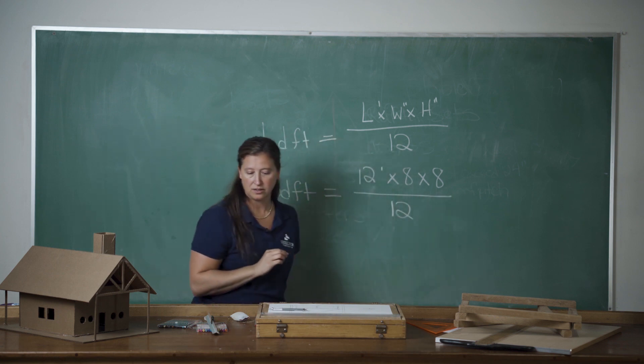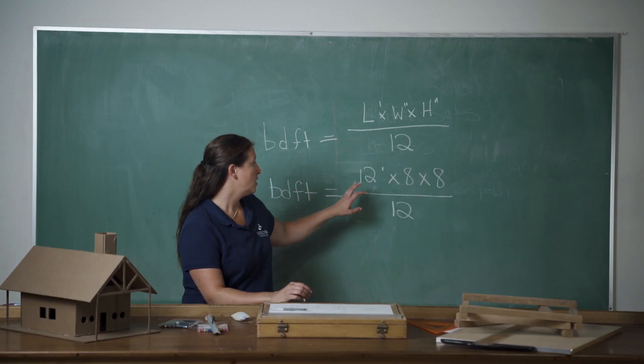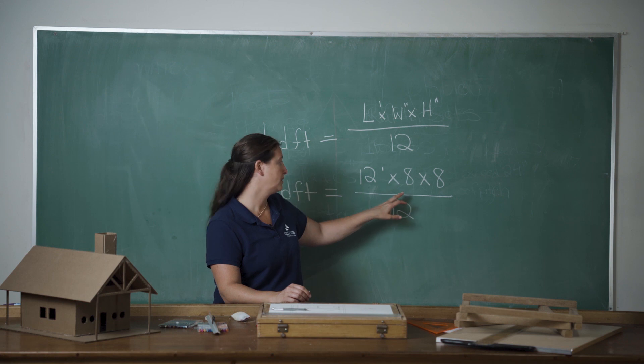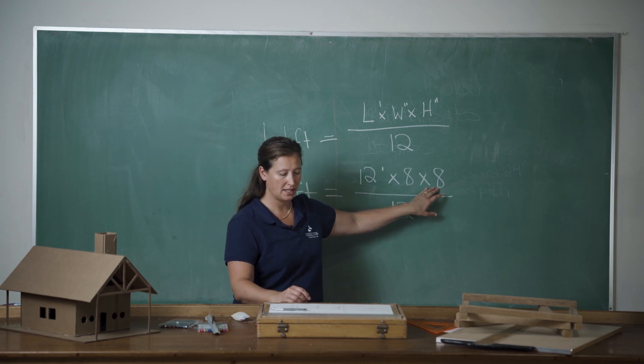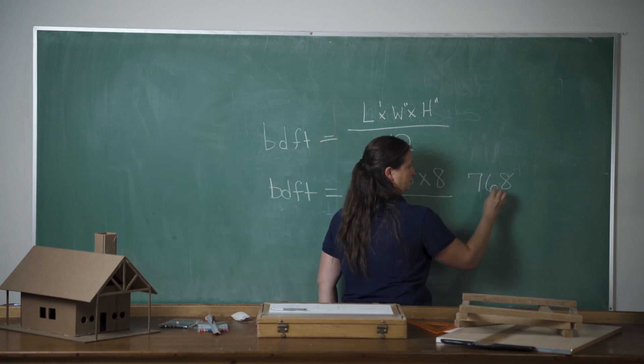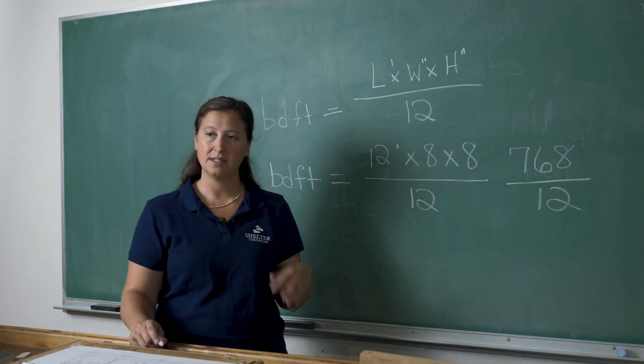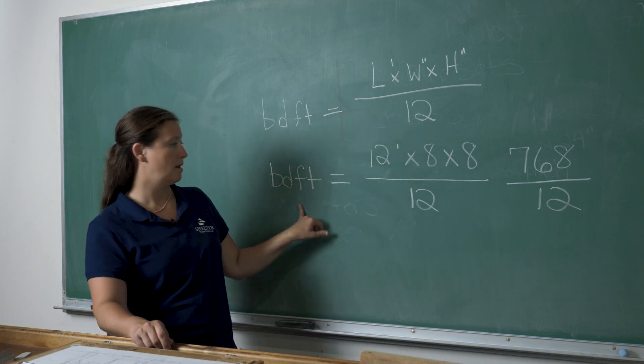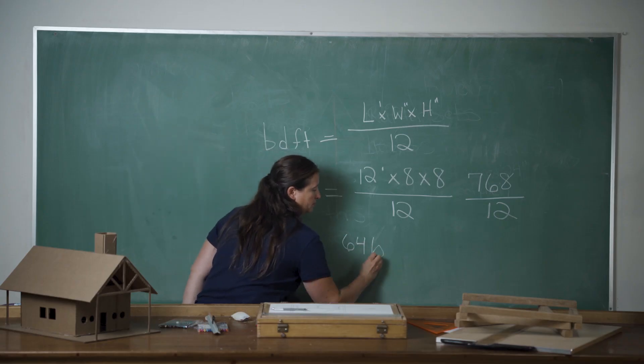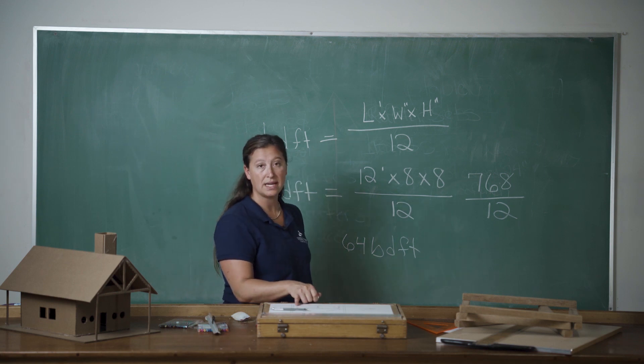Who's got a calculator? I don't. So we have 12 feet times eight inches times eight inches gives us 768. So we've got 768 over 12, and that gives us 64 board feet. So 64 board feet in our outside posts.